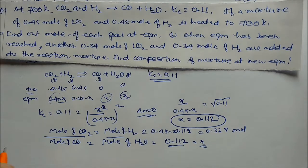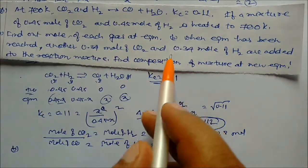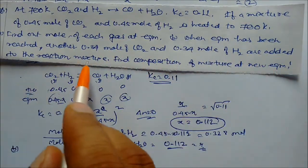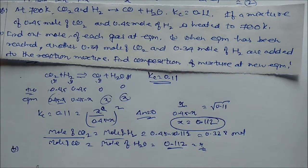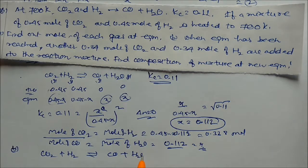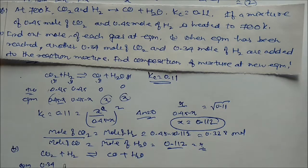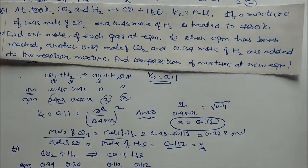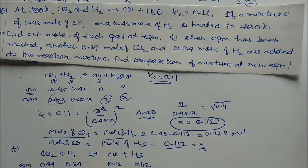For the second part, 0.34 mol of H₂ is added to the equilibrium mixture. We rewrite: CO₂ + H₂ ⇌ CO + H₂O. At the new starting point: CO₂ = 0.338, H₂ = 0.338 + 0.34 = 0.678, CO = 0.112, H₂O = 0.112.